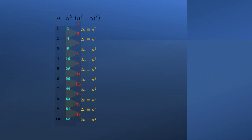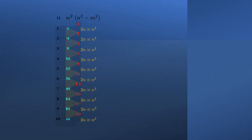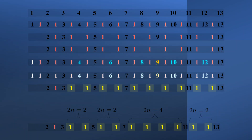Just as in any standard number line, any and every consecutive odd number has to be separated by a gap of 2. But notice that in the way we have generated the number lines, each perfect square corresponds to a 2n gap. Therefore, the gaps between the odd numbers serve three purposes. It represents a gap of 2 that must exist between every consecutive odd integer. It represents an even integer, 2n, as we progress up the number line. And it must also represent the perfect square that generated it.